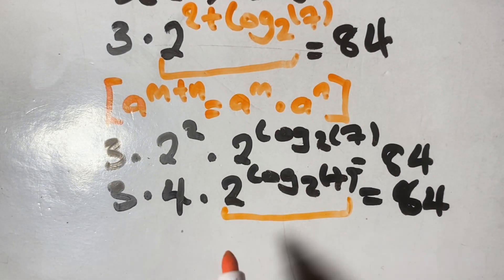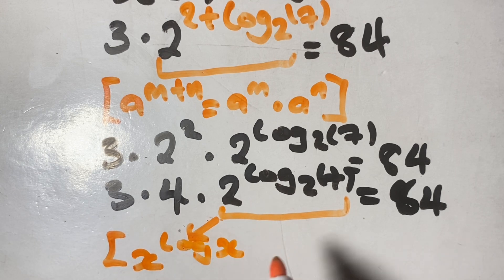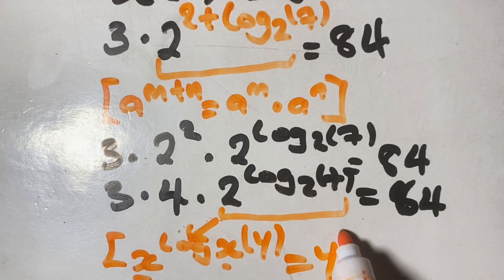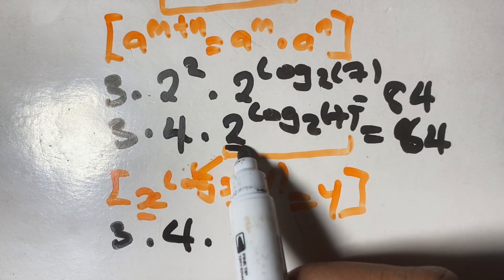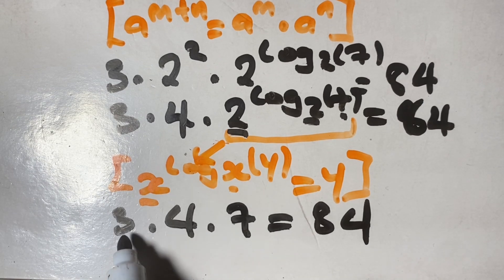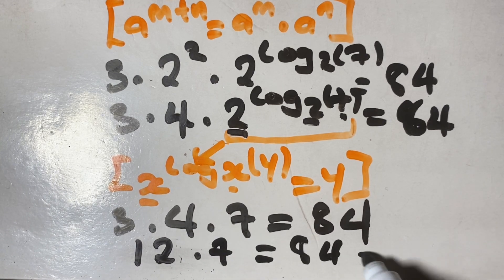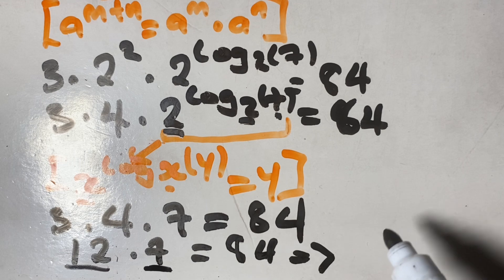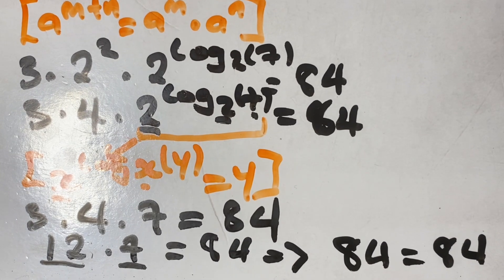Now we look at 2 to the power of log base 2 of 7, using the logarithm rule: x to the power of log base x of y equals y. This means we can write our equation as 3 times 4 times 7 equals 84. Now 3 times 4 equals 12, and 12 times 7 is indeed 84. So our solution x equals 2 plus log base 2 of 7 is now verified.